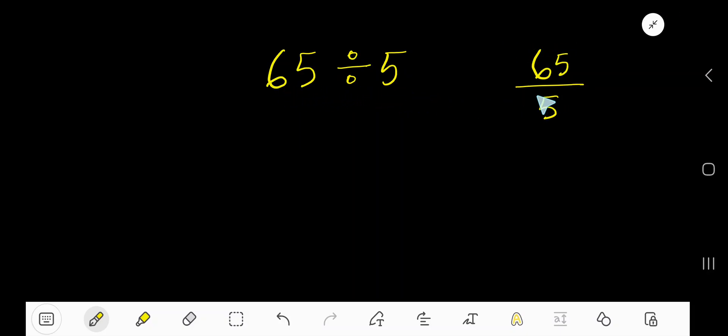65 divided by 5—that is how to divide 65 by 5. So let me divide 65 by 5 here. 5 is a divisor.